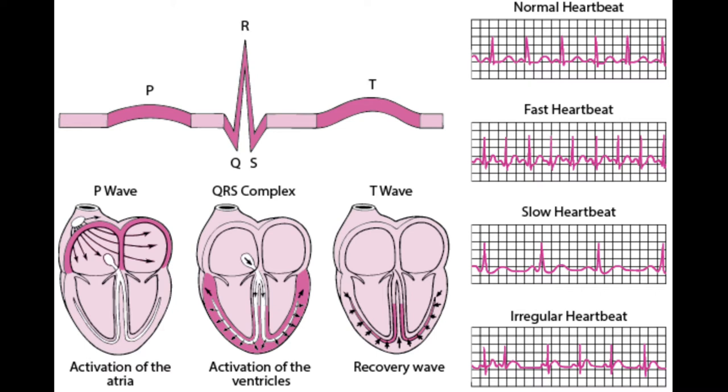The QRS complex is generated from the activation of the ventricles, and the T wave is generated from the recovery of the ventricles after contraction.